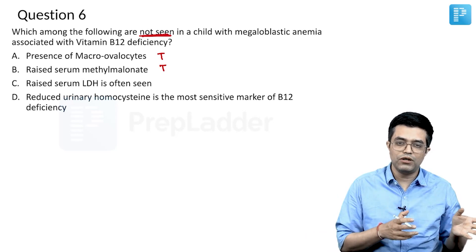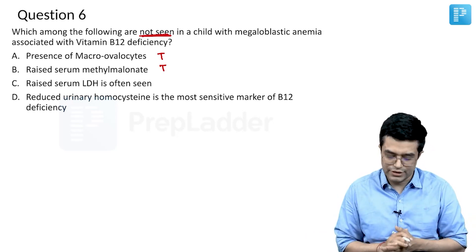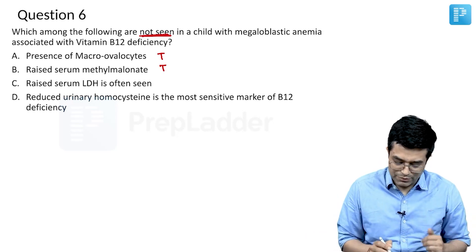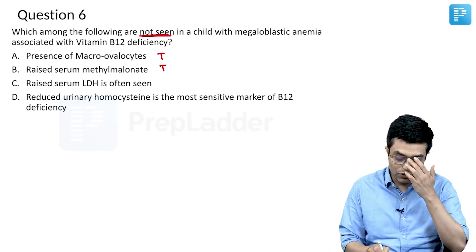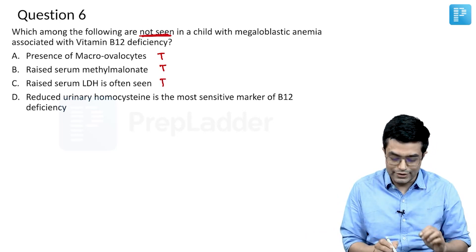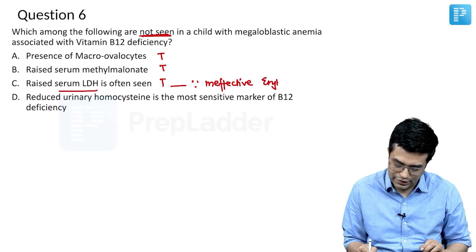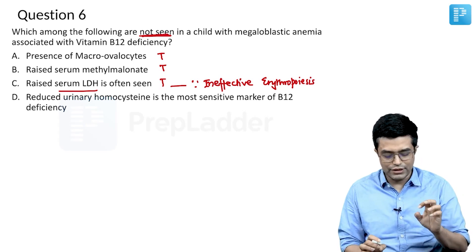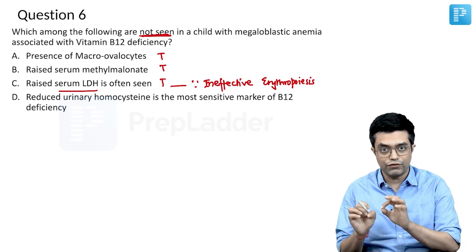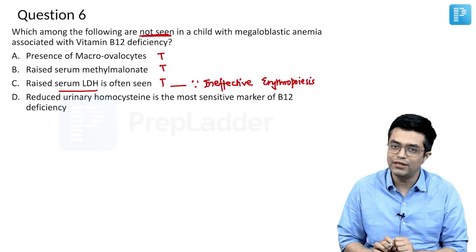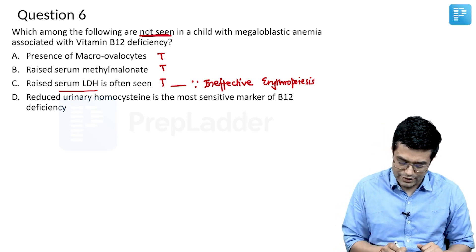Regarding serum iron, it may be normal or slightly increased in these patients. Option C — raised serum LDH is often seen — is also a true statement. Nelson clearly states raised serum LDH occurs because of ineffective erythropoiesis happening in these patients. Ineffective erythropoiesis can cause a moderate elevation of two to three times normal LDH in these patients.